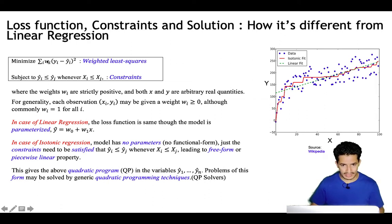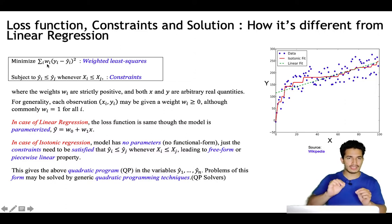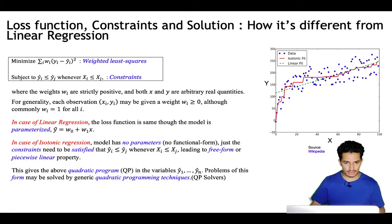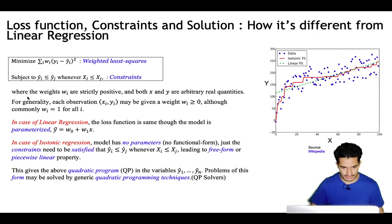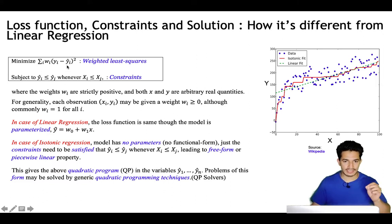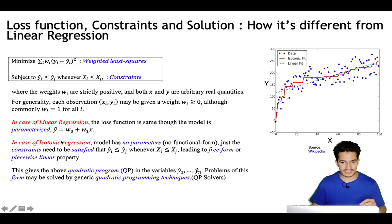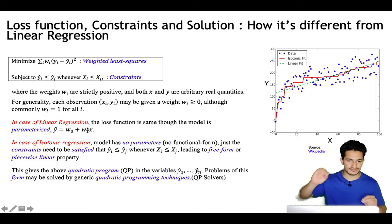The wi in the weighted least squares — if we give each observation equal weightage, wi equals 1. But we can also choose to give different weightage to different data points. In the case of linear regression, ŷ is parameterized: ŷ = w0 + w1·x, where w0 is the intercept and w1 is the coefficient, so it has a parameterized functional form.